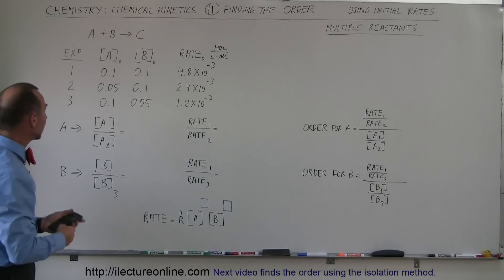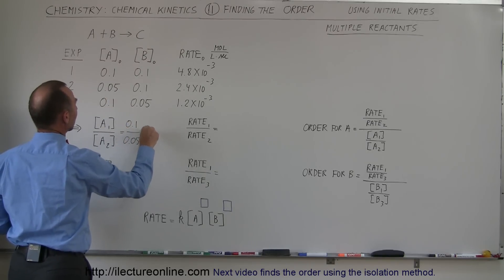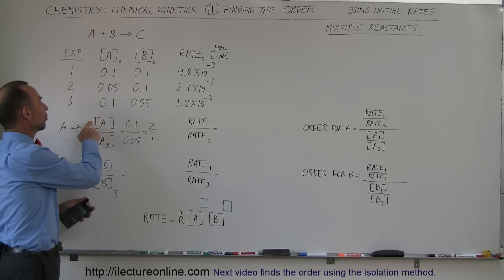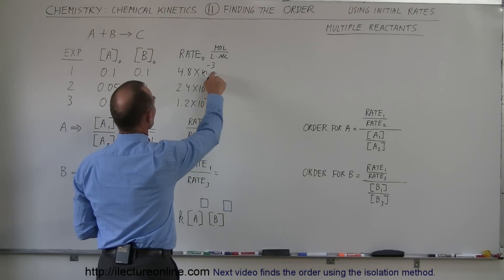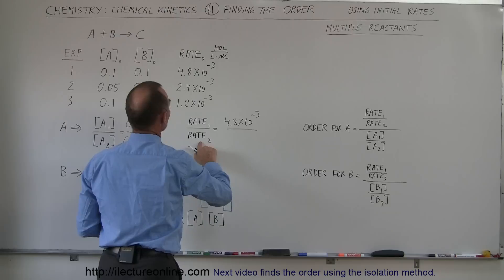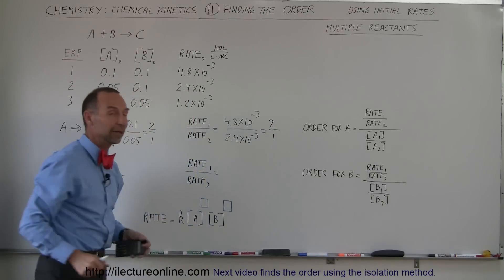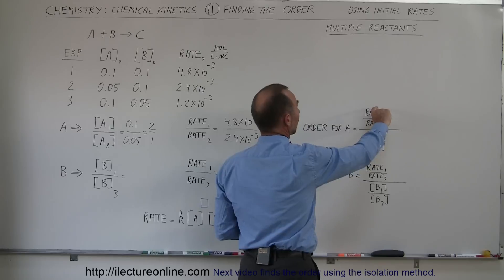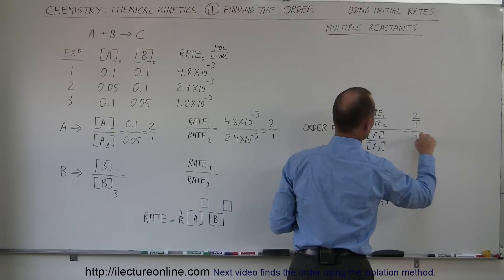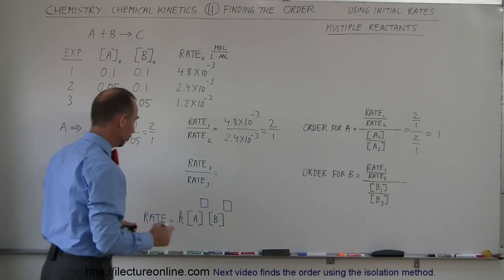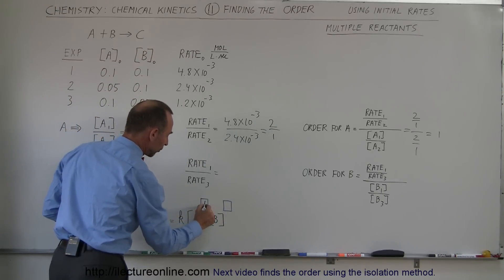For A, the concentration in Experiment 1 was 0.1 and in Experiment 2 was 0.05 — a 2-to-1 ratio. The rate in Experiment 1 was 4.8×10⁻³ and in Experiment 2 was 2.4×10⁻³, also a 2-to-1 ratio. Since the rate ratio equals the concentration ratio, the order for A is 1. So in the rate equation — rate = k[A]^m[B]^n — the order of A is 1.